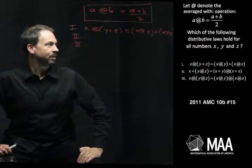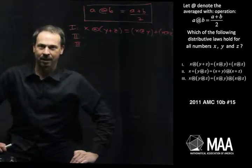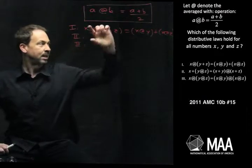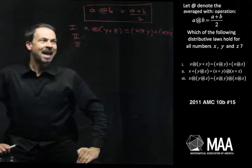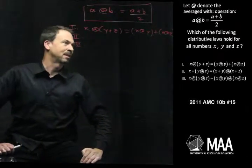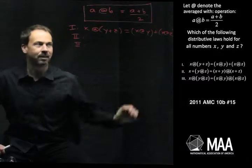Which of the following distributive laws hold for all numbers x, y, and z? And the question has three laws, as you can see on the screen, but I just wrote down one of them here, the first one. Something like x at y plus z, apparently is meant to equal x at y plus x at z, and so on.